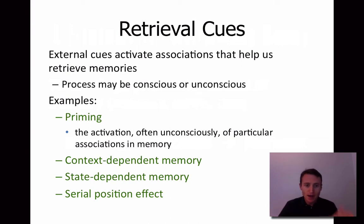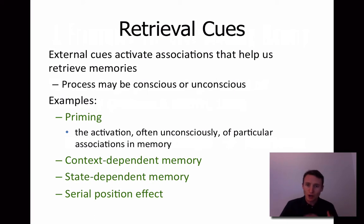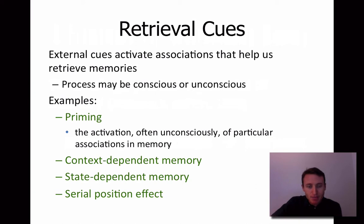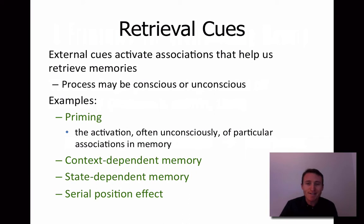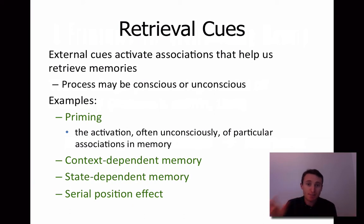But many times we are aware. So let's look at some others that are more at a conscious level. Context-dependent memory — context refers to the environment that you're in. Researchers have shown that the environment we are in when we learn something, if that is the same environment we are in when we are trying to retrieve something, the likelihood of retrieval increases. We can actually use that to help us study for exams. If you take exams in a classroom, you want to study in an environment as similar to that classroom as possible. Studying at Starbucks might not be doing you any favors because Starbucks is loud and busy, and your brain is activated in certain ways in that environment.